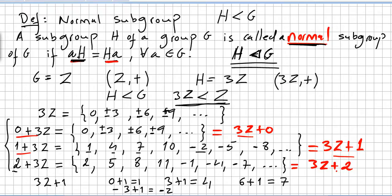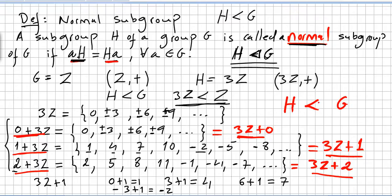So basically, all left cosets are equal to the right cosets. We knew that H is a subgroup of G, but now since the left cosets are equal to the right cosets, we can say that H is a normal subgroup of G — that is, A operation H equals H operation A.